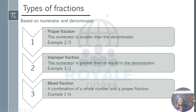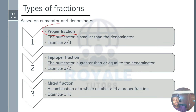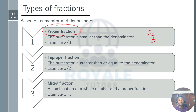Types of fractions. Based on the numerator and denominator, we have three types of fractions. The first is the proper fraction. A proper fraction is known by a smaller numerator — that is, when your numerator is smaller than your denominator. An example is 2 over 3; 2 is smaller than 3, which is the denominator. So we call this a proper fraction.